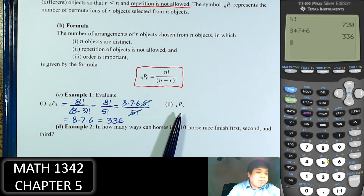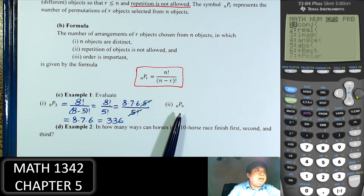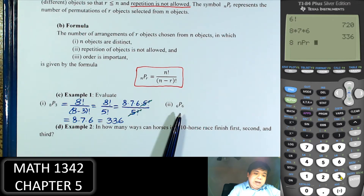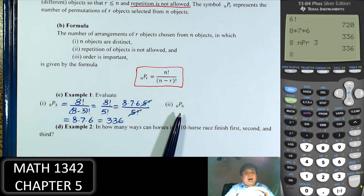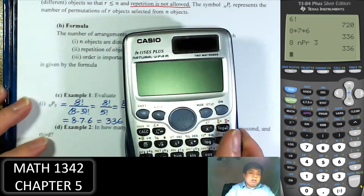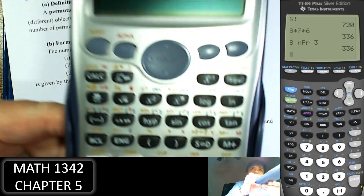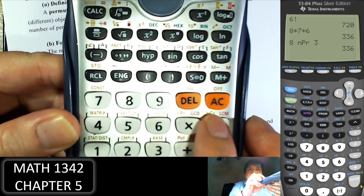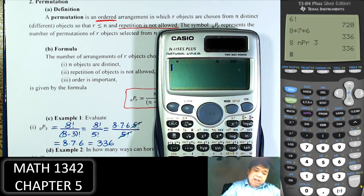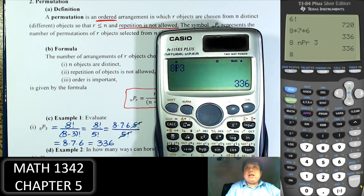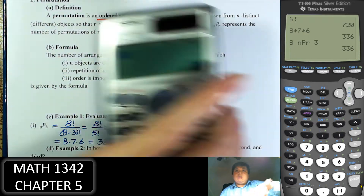To use the calculator: enter 8, then Math, go to the Probability tab, permutation is option number 2, and enter 3. A common scientific calculator can also do this — you enter 8, then use the nPr function, and enter 3, giving the same result.